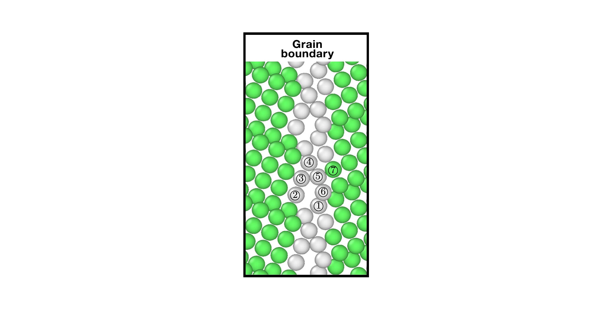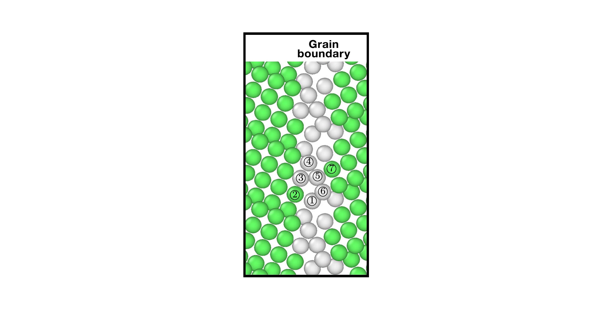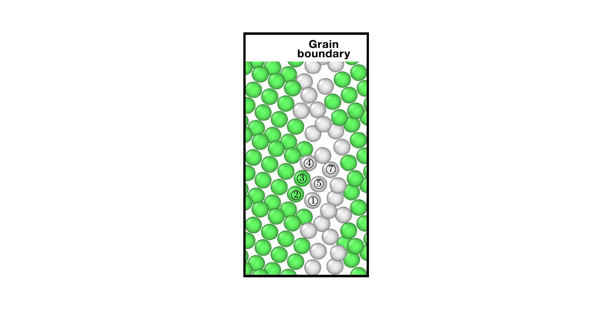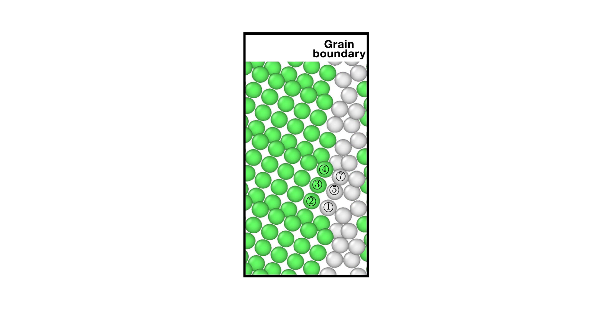This is in contrast to more conventional grain boundaries, which advance by the shuffling of whole groups of atoms. But this team has shown that while that may be true for many fast-moving boundaries, not all of them migrate in this way.